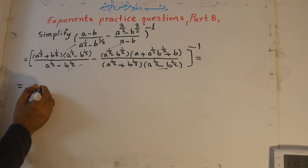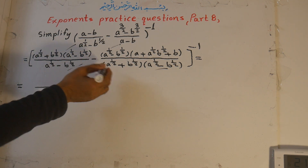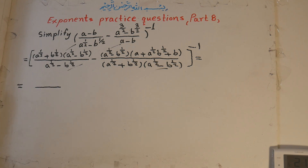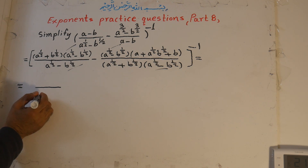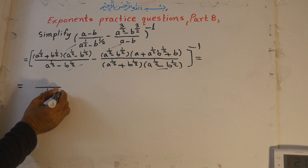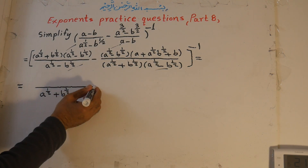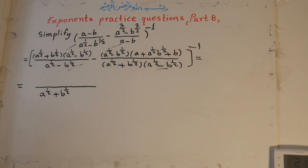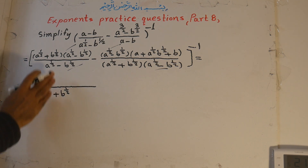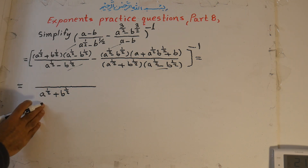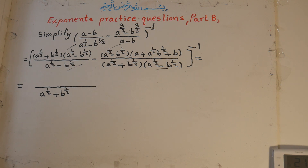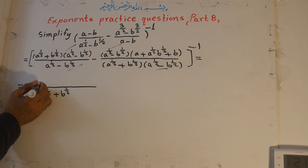We take common denominators for both of these. Here is 1 times a to the power of 1/2 times b to the power of 1/2. The denominator is a to the power of 1/2 plus b to the power of 1/2. This is the common denominator, and the common denominator divided by 1 gives a to the power of 1/2 plus b to the power of 1/2, times a to the power of 1/2 plus b to the power of 1/2 squared.